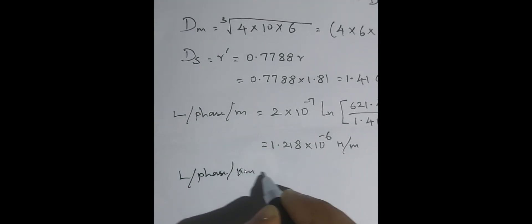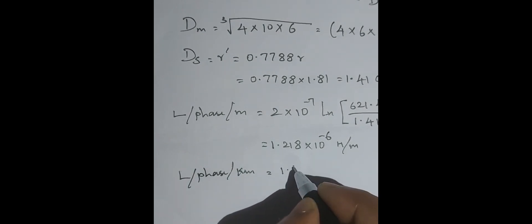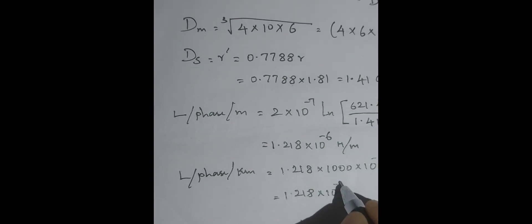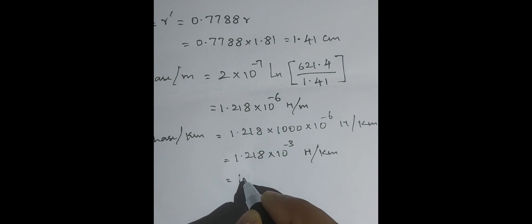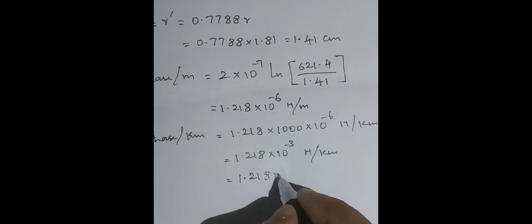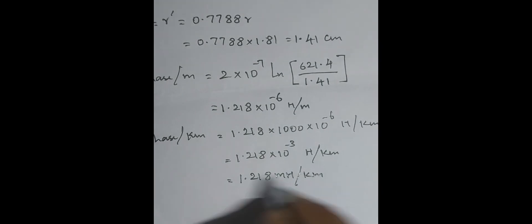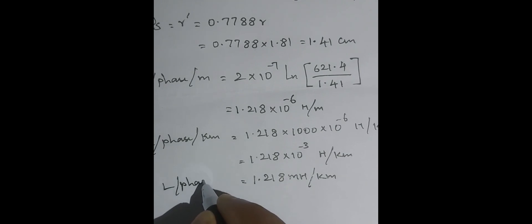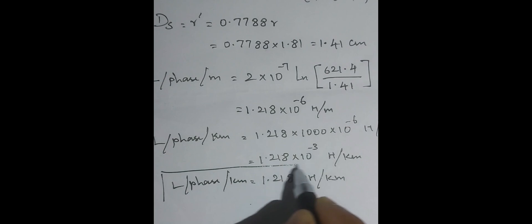But the problem asks for inductance per phase per kilometer. For 1 kilometer, multiply the per-meter value by 1000: 1.218 × 10⁻⁶ × 10³ = 1.218 × 10⁻³ Henry per kilometer, which equals 1.218 millihenry per kilometer. This is the final answer for inductance per phase per kilometer. Remaining topics will be discussed in the next class.